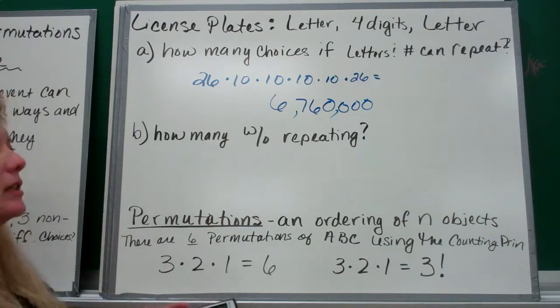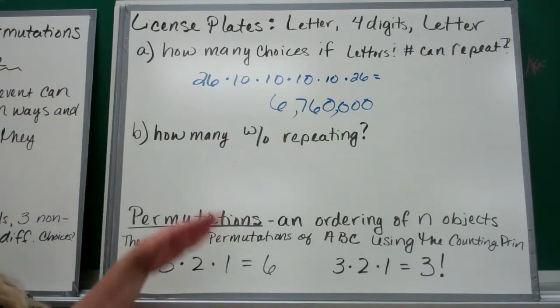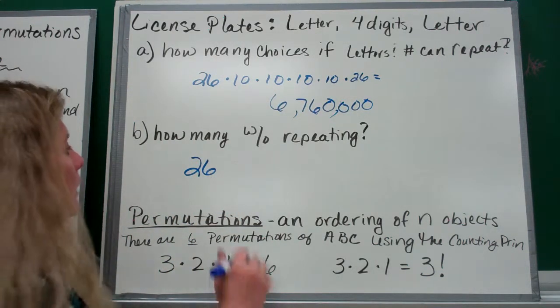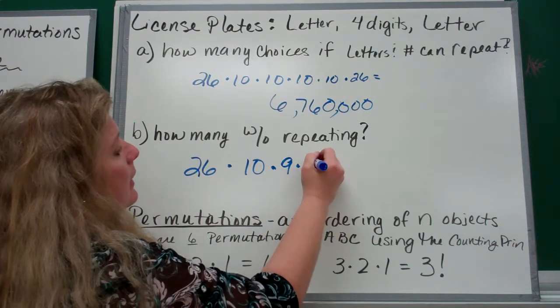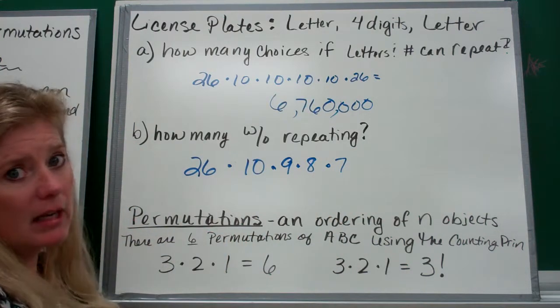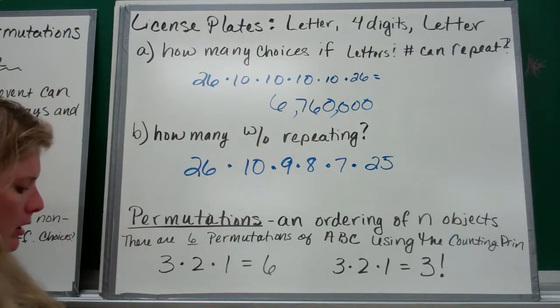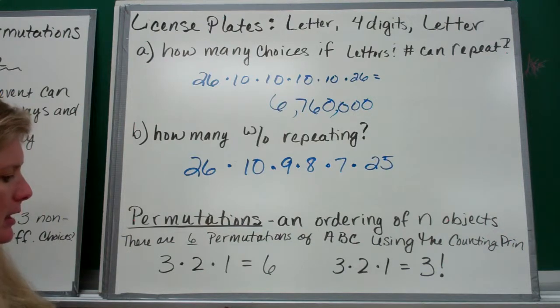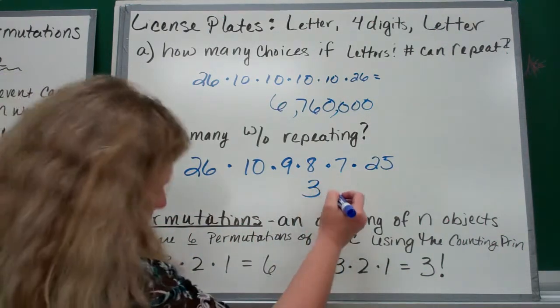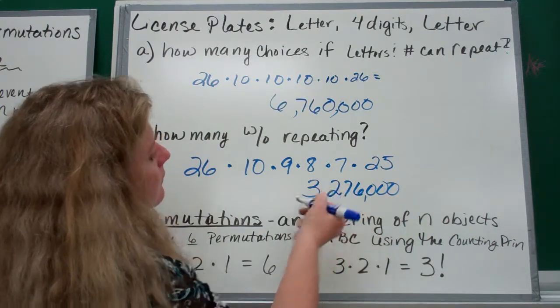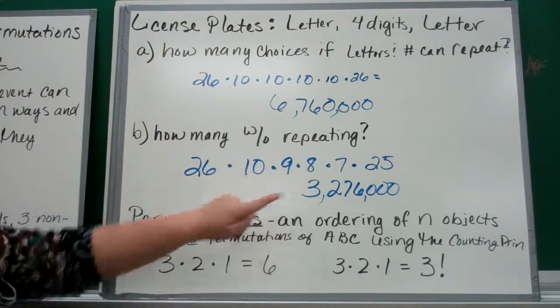Six million seven hundred sixty thousand. But how many different combinations could they have if they cannot repeat? For your first letter, you still have 26 letters to choose from, then for your first number you've got 10, but if you can't repeat, then it's going to be 9, then 8, then 7. For the second letter, we've already used one, so we have 25. So it's 26 times 10 times 9 times 8 times 7 times 25, and this time our choices is reduced to 3 million 276 thousand.